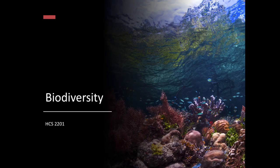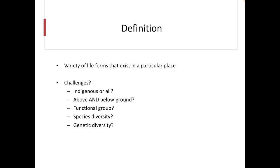This is the video lecture for biodiversity. It's a difficult thing to define — it's one of those things that often we say we know it when we see it. Officially, it's the number and variety of life forms that exist in a particular place. But there are challenges: do we include all things, or just the indigenous, native things?